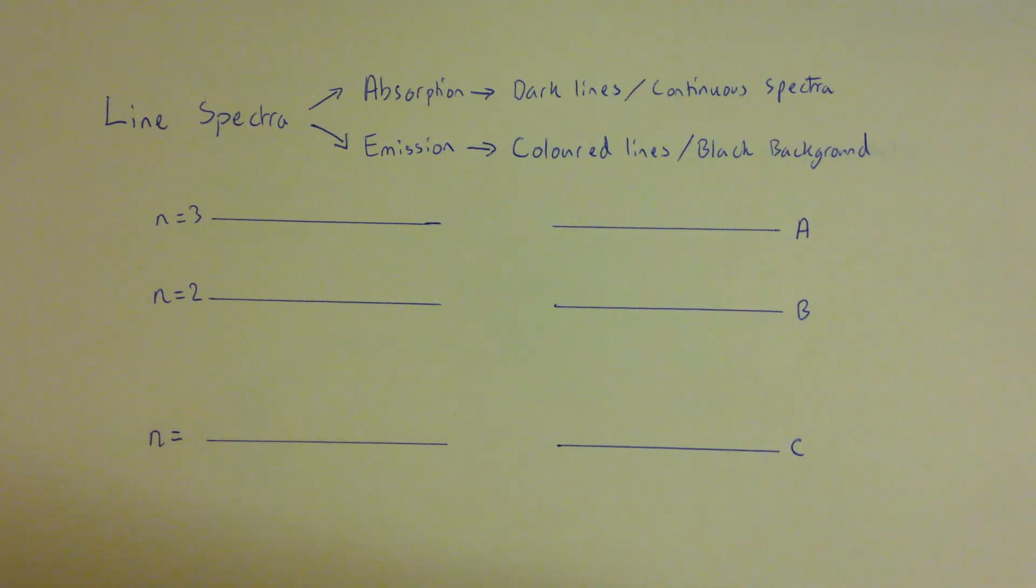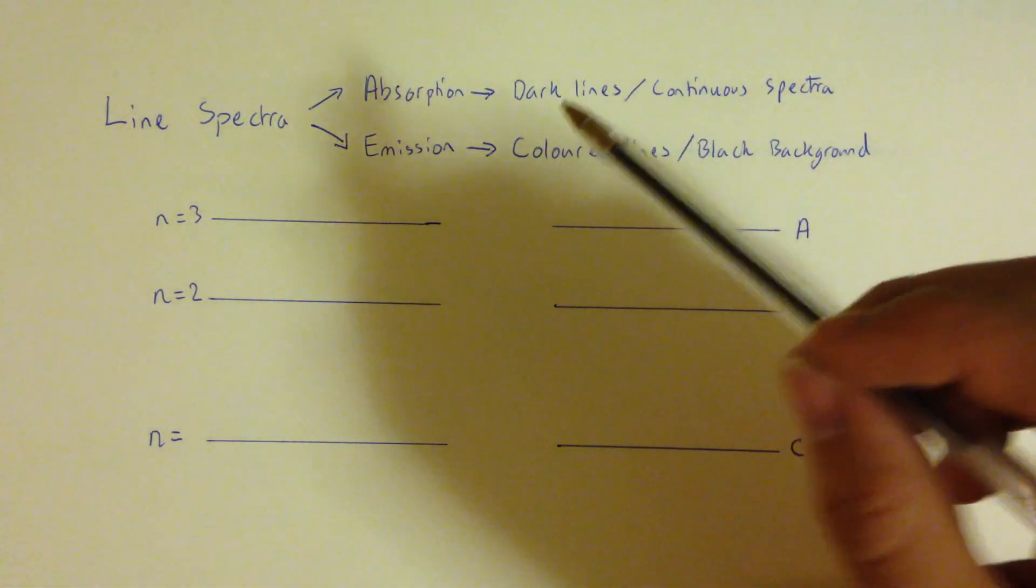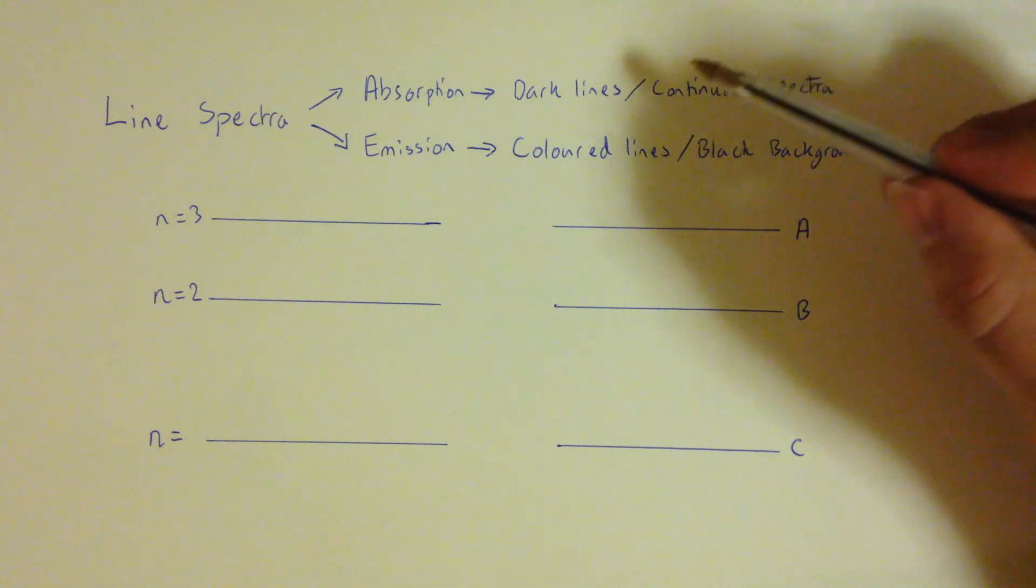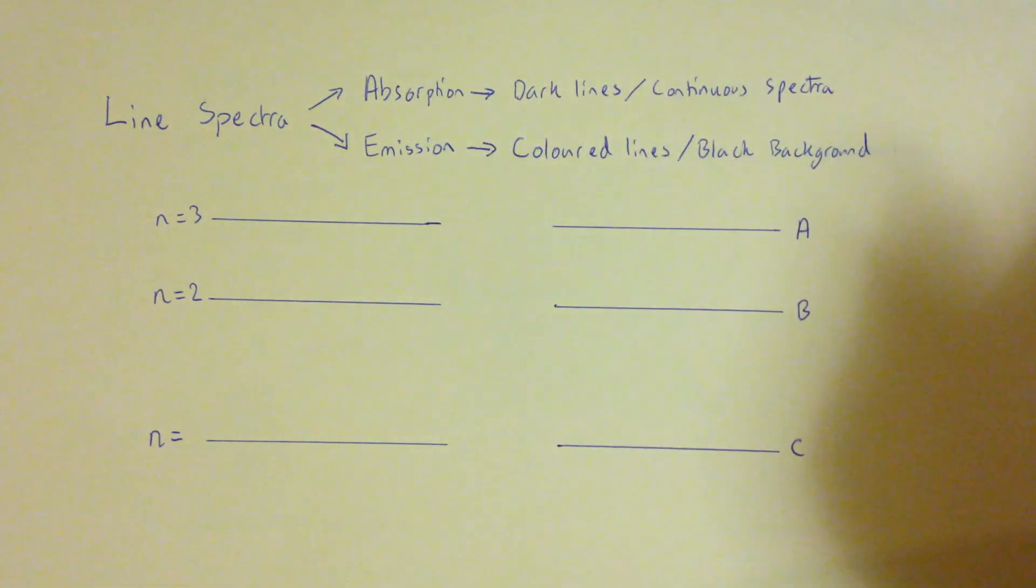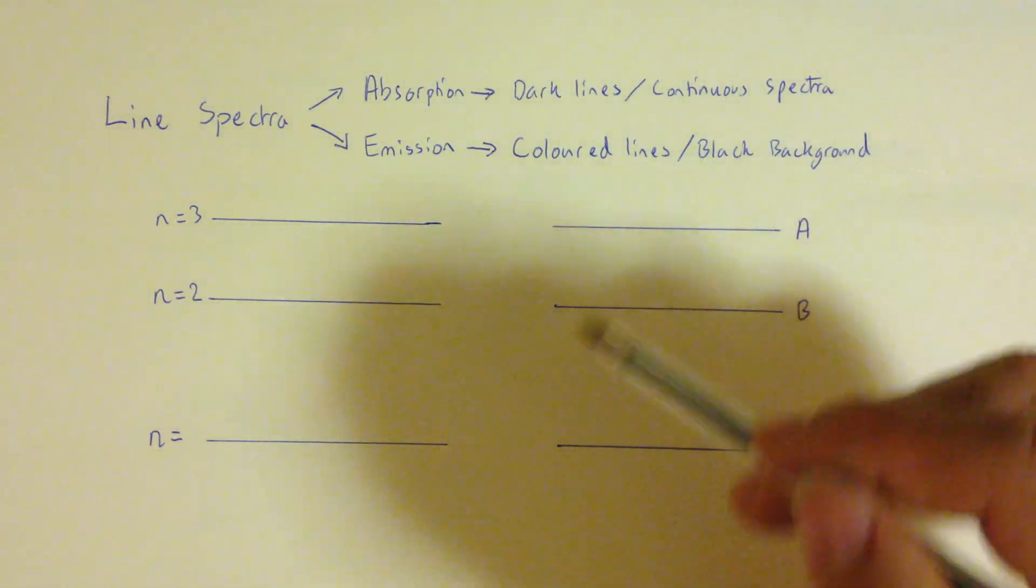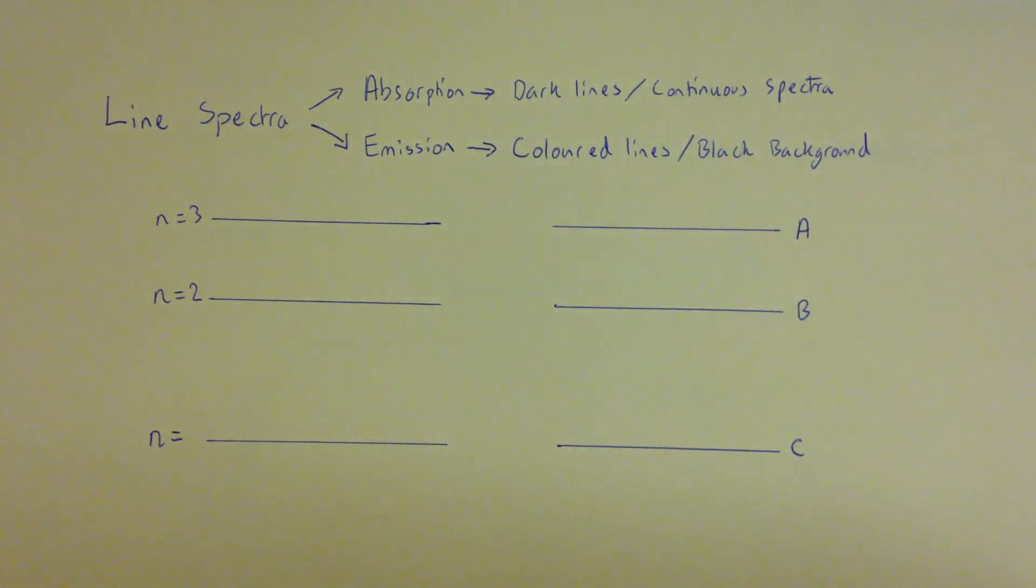In the solid state, the energy levels overlap, and so this provides continuous spectra to sometimes be produced. An absorption spectra is when we have dark lines corresponding to the energy levels within an atom with a background of a continuous spectra, so all of the different colours. An emission spectra is when we get those individual coloured lines and we get black background.